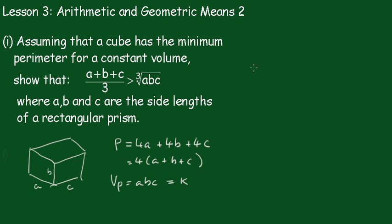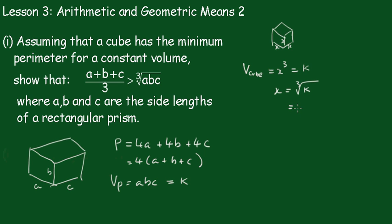Now the volume of the cube — drawing another one here — with side lengths x, x, x, it's just going to be x cubed, and that's constant. Therefore x is equal to the cube root of k, which is the cube root of abc.